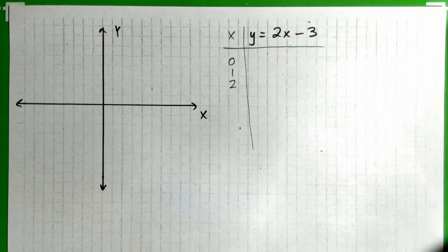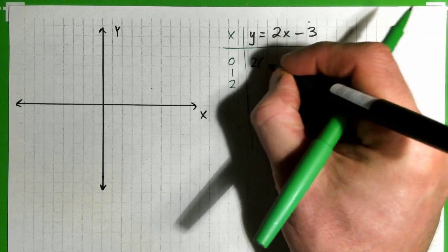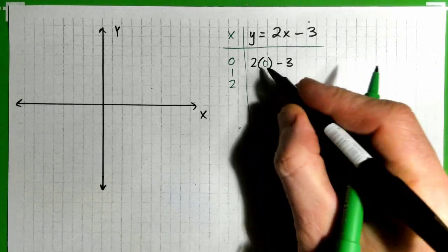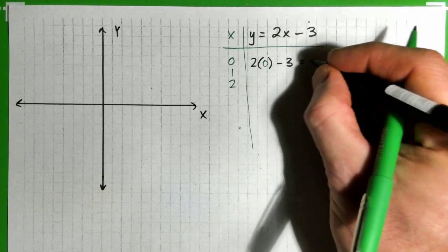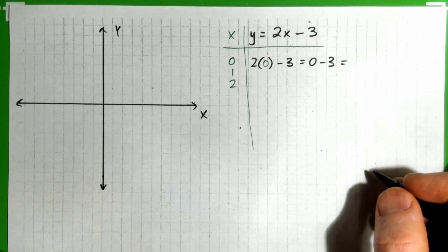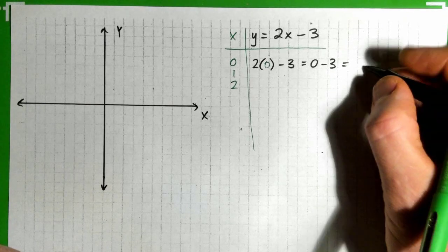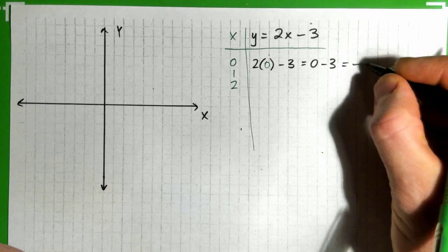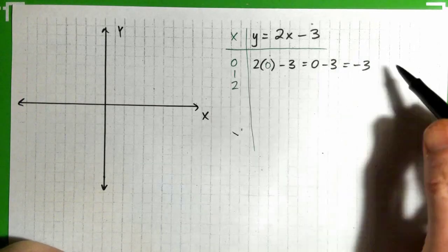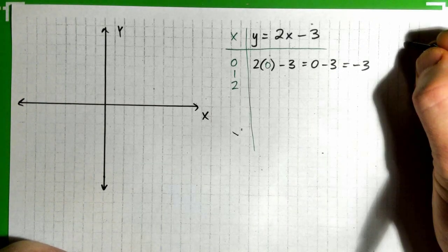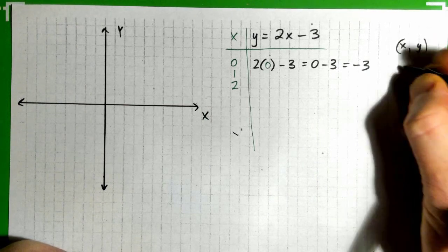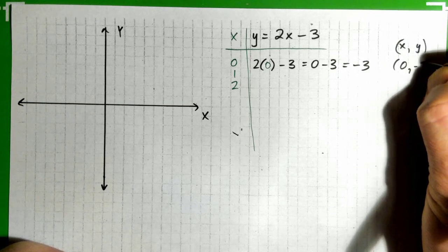When x is 0, we get 2 times 0 minus 3. That's 2 times 0, which is 0, minus 3. And 0 minus 3 is negative 3. So x is 0, y is negative 3. Our first point is (0, -3).